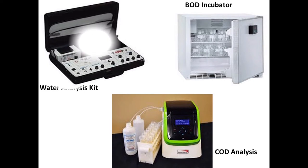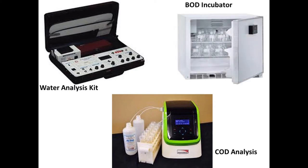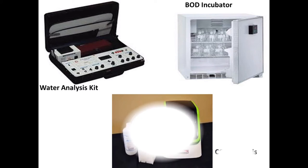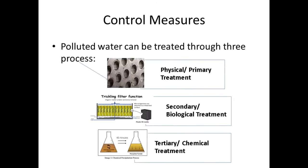These are the instruments used to check the quality of water. A water analysis kit is used to measure pH, electrical conductivity, total dissolved solids, etc. A BOD incubator is used to measure biological or biochemical oxygen demand, and a COD apparatus is used to measure chemical oxygen demand. Polluted water can be treated through physical treatment or primary treatment, biological treatment or secondary treatment, and chemical treatment or tertiary treatment.